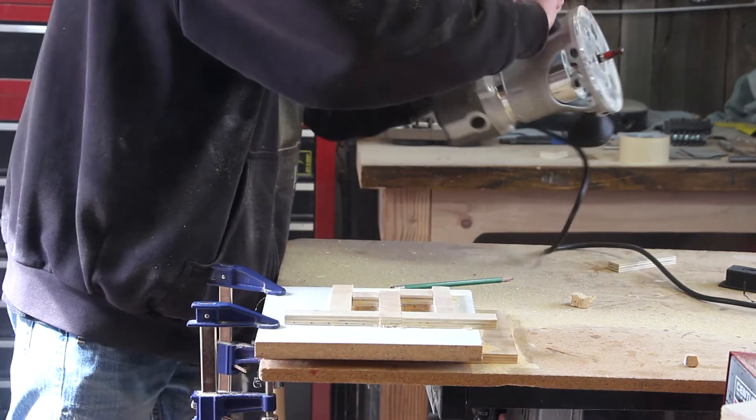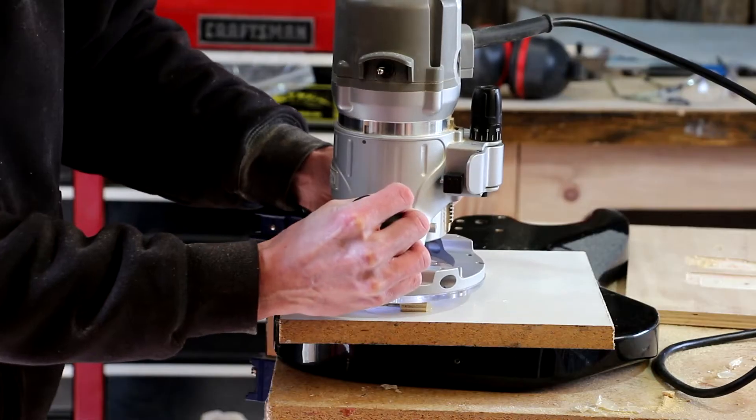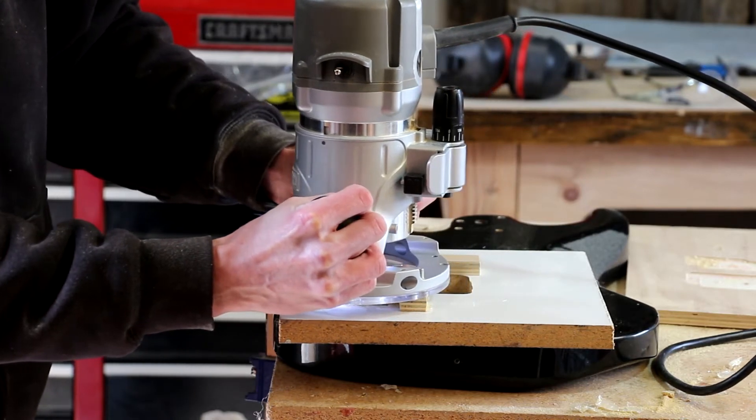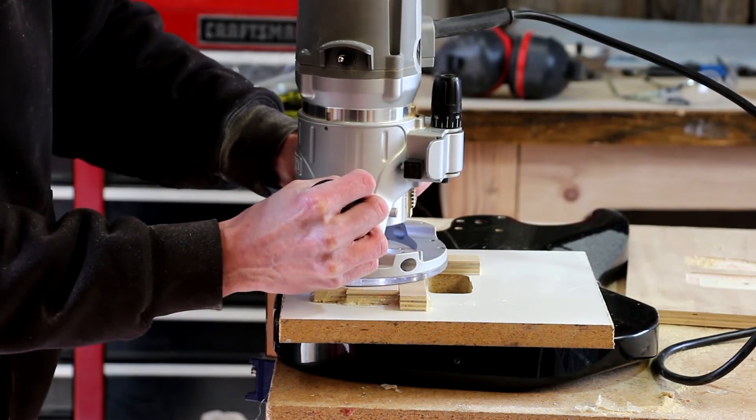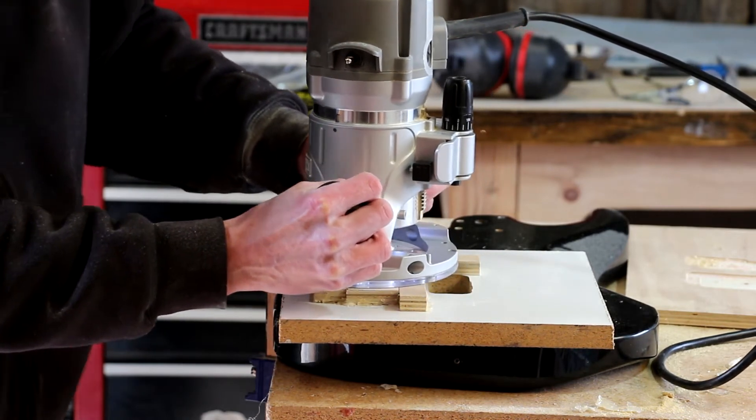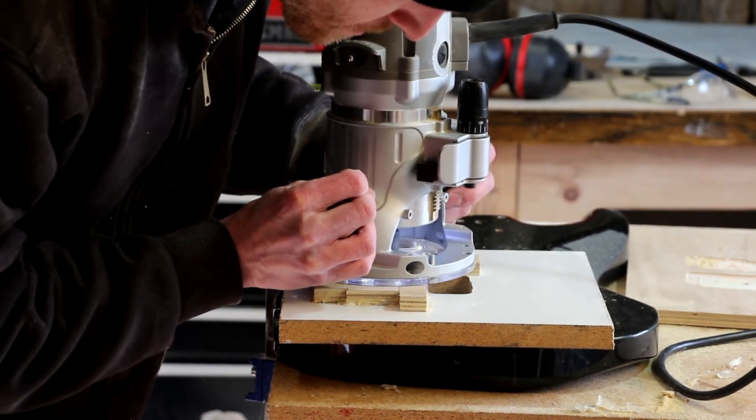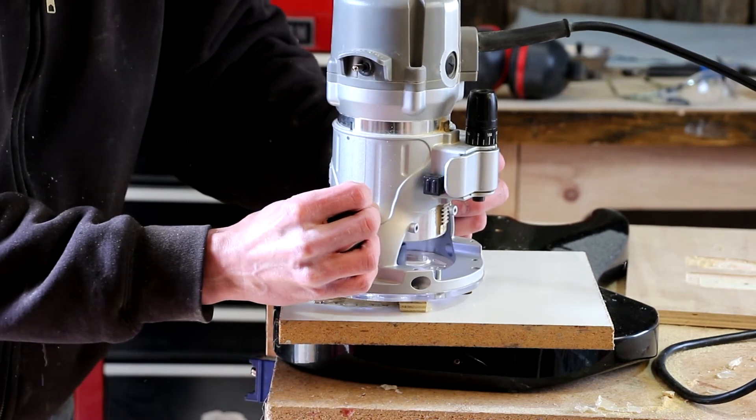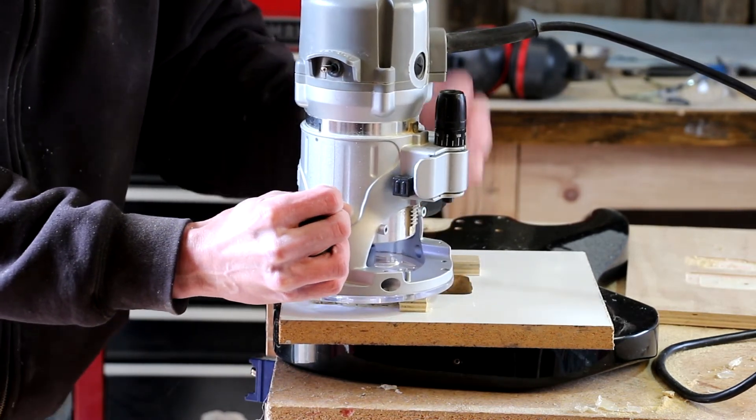So now I can just take my template and clamp it down on the body of the guitar right where I need the template. I've left part of the plywood guides on the template to account for the router depth. The first cut is going to be a very shallow recess.